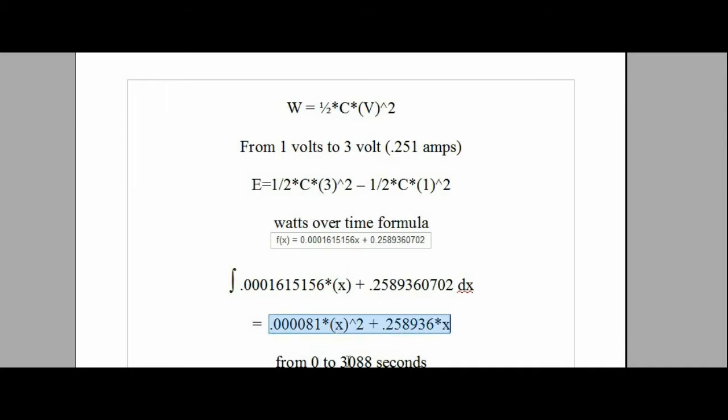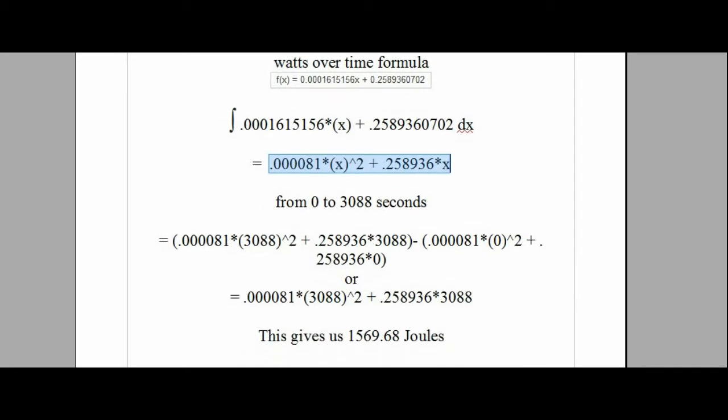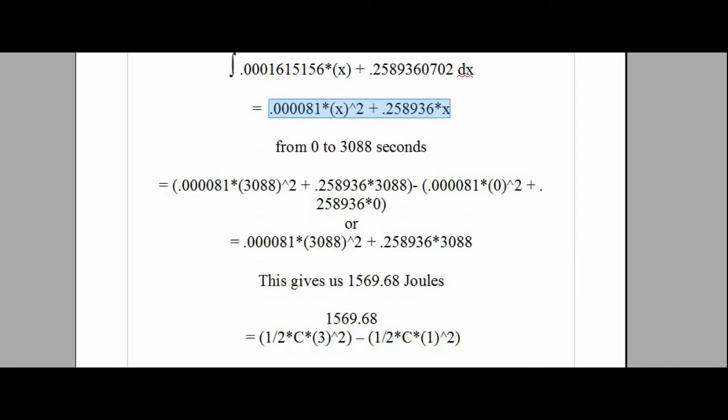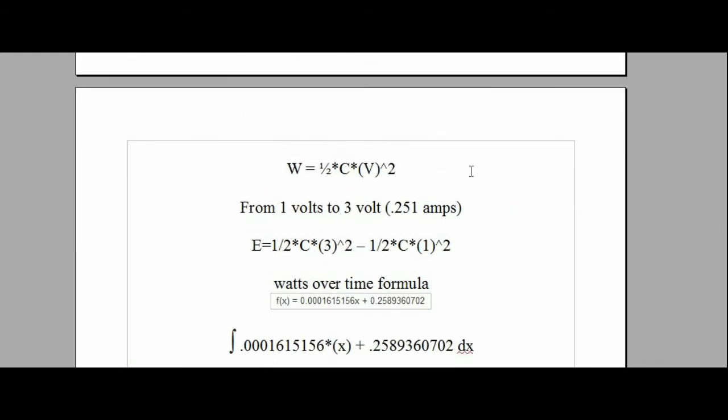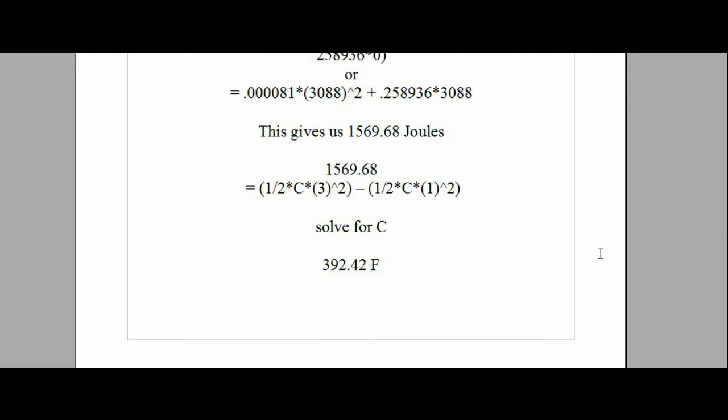Remember, we take the integral of that equation and we get this here. It took 3,088 seconds to charge from 1 volt to 3 volts at that quarter amp rate. So we evaluate that integral over the area of 3,088 and 0, and we end up with this final equation here. It gives us 1,569 joules. We take those joules and put them into our original equation, and we evaluate for the capacitance. I end up getting 392 farads at quarter amp charge. I had 400 when charging at 1 amp.